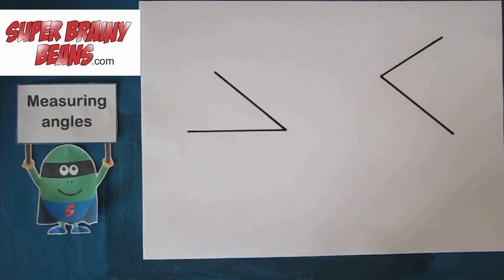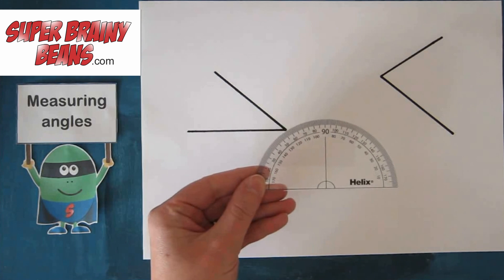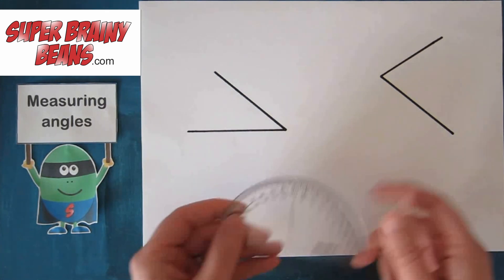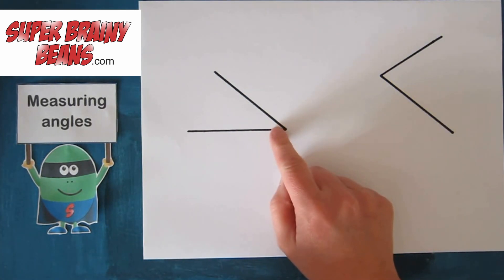To measure angles you need a protractor. Now we've got two angles here. I'm going to measure this one first to find out what this is.